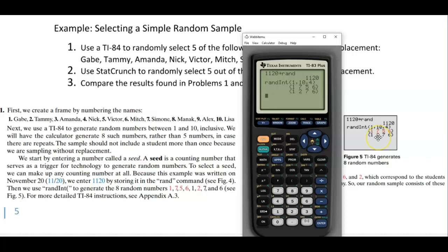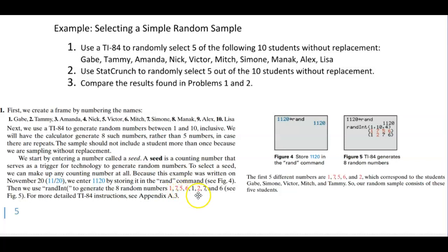And therefore those are the numbers that have been selected that are associated with the names that we applied those numbers to. So now we're looking at the numbers one, seven, five, six, and two. We know that one is associated with Gabe, seven is Simone, five is Victor, six is Mitch, and two is Tammy. So these are our random sample consisting of those five students.